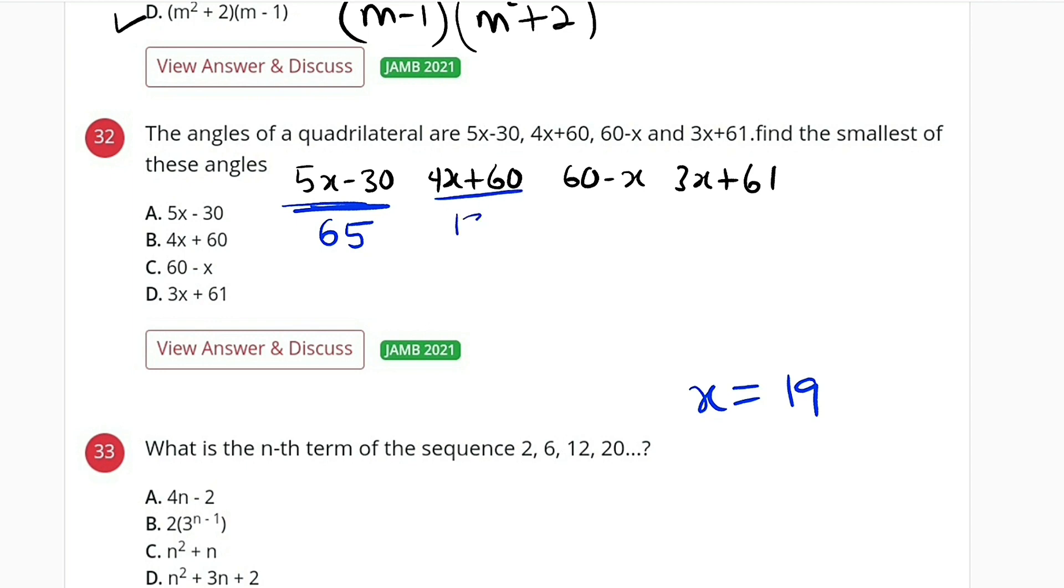Moving on here, we have 60 minus 19, that will give us 41.